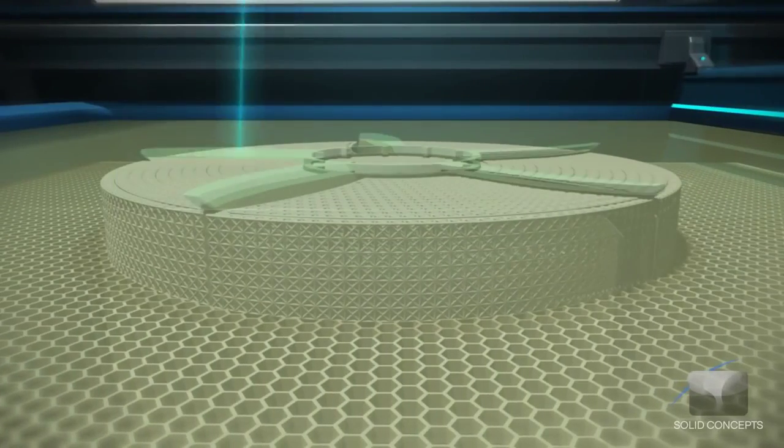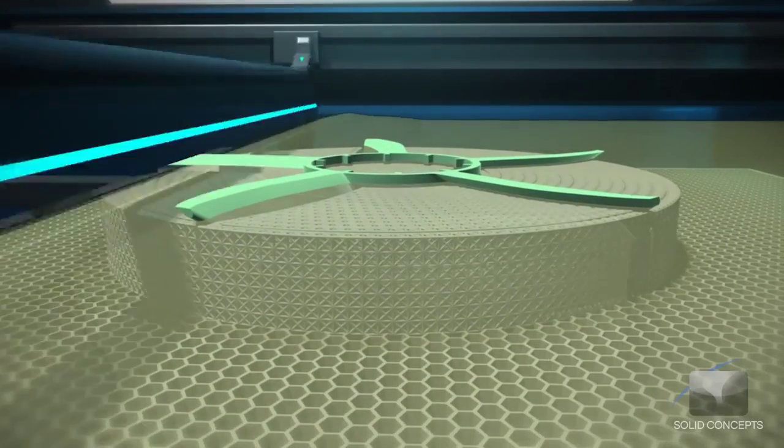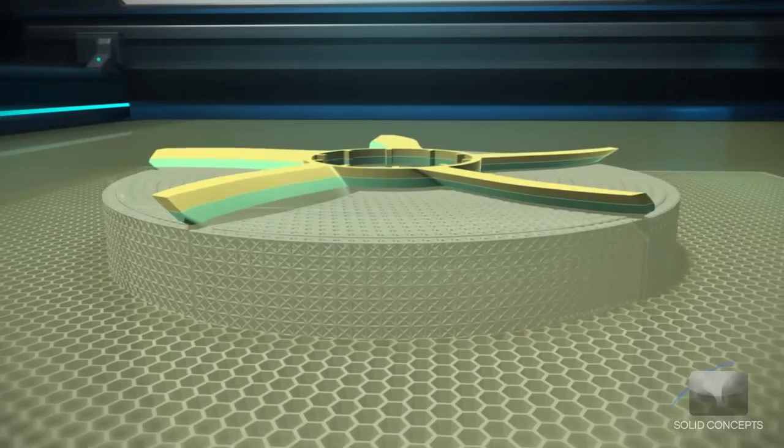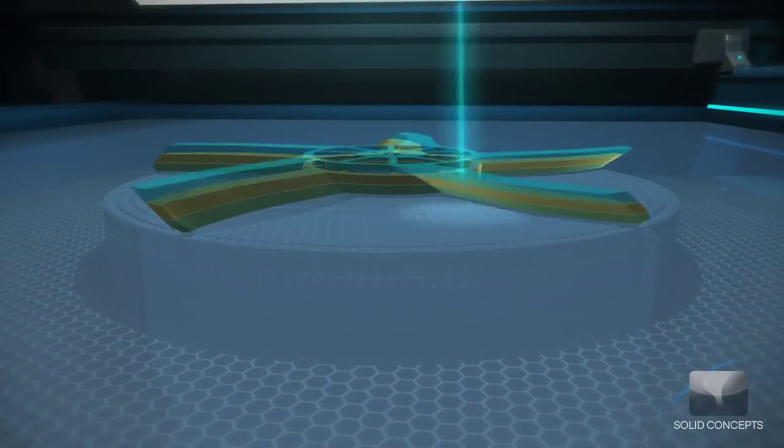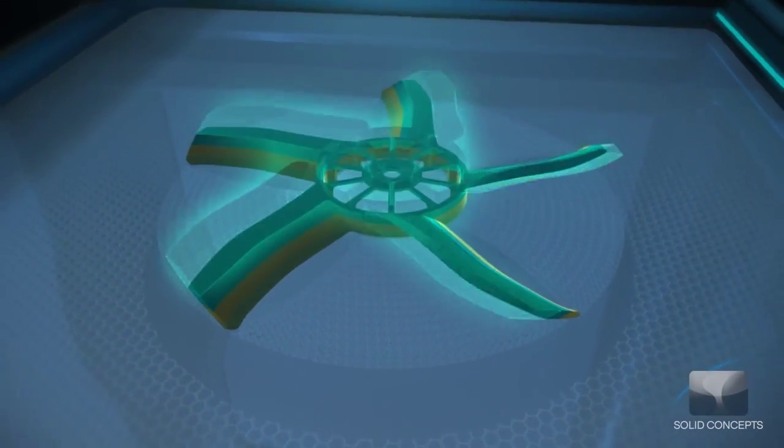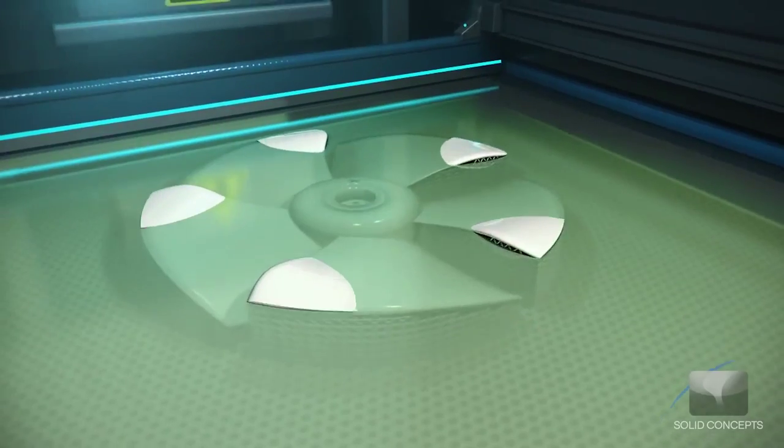A re-coater blade moves across the surface ensuring a thin coat of fresh liquid resin is evenly spread over the object. The laser continues to trace and form each layer atop the previous layer, building from the bottom up.